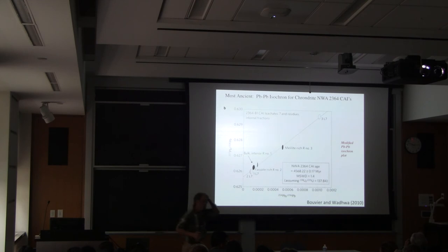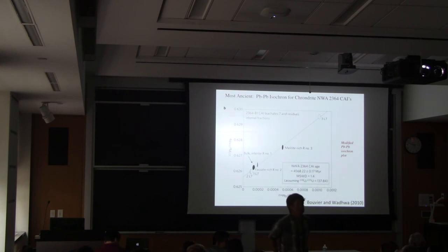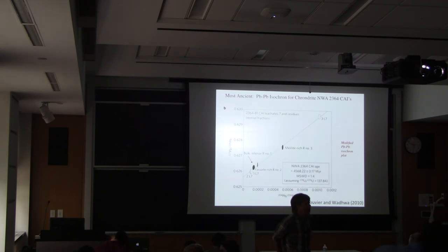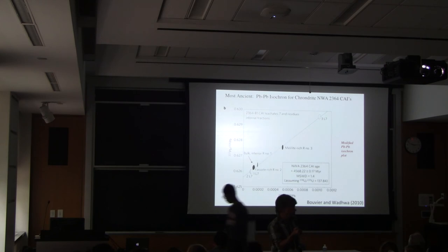A good question: if we're talking about calcium-aluminum inclusions, where does uranium come from? Uranium is almost always present as a trace element in minerals, which means that every mineral has a tiny little bit of uranium in it. So even though they're calcium-aluminum inclusions, they have a little bit of uranium in there to begin with. And that's good, because if they didn't, you wouldn't be able to date them.